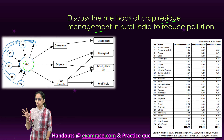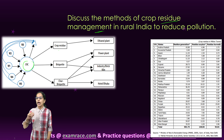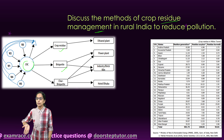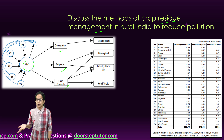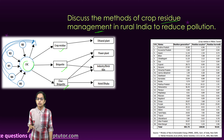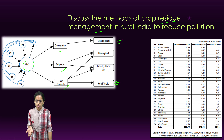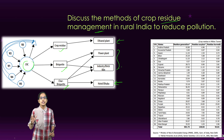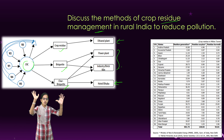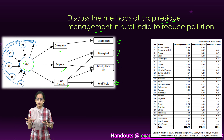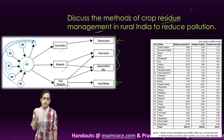Crop residue management can be beneficial for farmers and also reduce pollution. Various villages collect crop residues, which could be classified either as a crop residue briquette or a char briquette. Char briquettes can be used in hotels and dhabas, crop residues can be used for ethanol plants, and briquettes can be used for industrial and power plants.